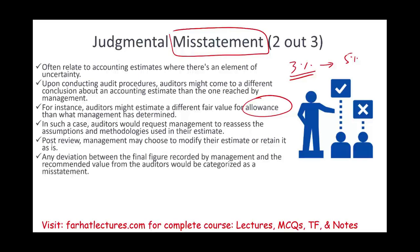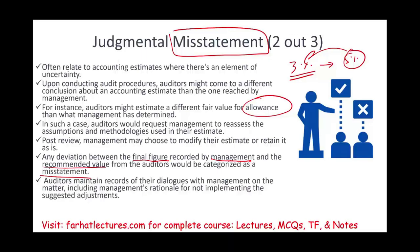So any deviation between the final figure recorded by management and the recommended value — say, the recommended 5% but they stuck with 3% — this will be a misstatement, and this misstatement is judgmental. We think differently; we think they should increase their allowance, while they think their customer is going to pay and they should not have a 5% allowance. An auditor will have to maintain a record between management and themselves about the rationale, about all these estimates and suggestions.